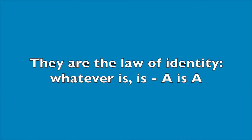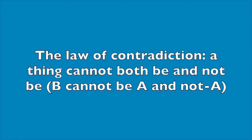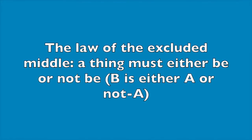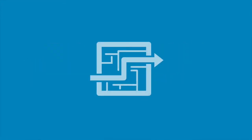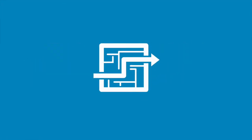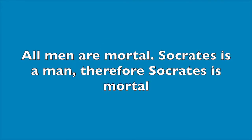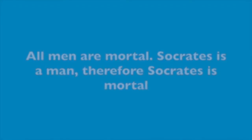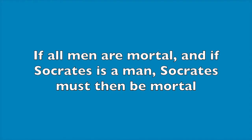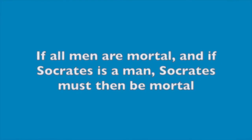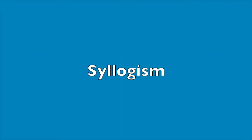The three laws of thought are: the law of identity — whatever is, is, or all A's are A's; the law of contradiction — a thing cannot both be and not be; and the law of excluded middle — a thing must either be or not be. Deductive thinking is largely reducible to a form such as: all men are mortal, Socrates is a man, therefore Socrates is mortal — or more exactly, if all men are mortal and Socrates is a man, Socrates must be mortal. Such a form is known as a syllogism.